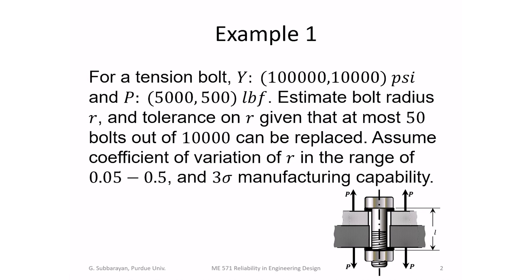The example is a tension bolt with a strength of 100,000 PSI mean value and a standard deviation of 10,000 PSI — so 10 percent of the mean value. The load on the bolt has a mean value of 5,000 pound-force and a standard deviation of 500 pound-force. If you prefer SI units, you can convert to pascals and newtons without changing the solution approach.